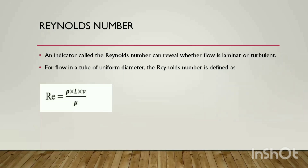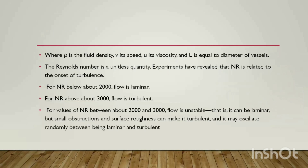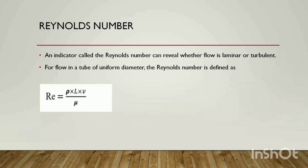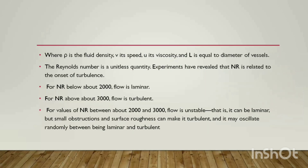An indicator called the Reynolds number can reveal whether flow is laminar or turbulent. From this number we can determine whether the flow in a blood vessel is laminar or turbulent. For flow in a tube of uniform diameter, the Reynolds number is defined as Re = P × L × V / μ, where P is fluid density, V is its speed, μ is its viscosity, and L is the diameter of the vessel. The Reynolds number is a unitless quantity.